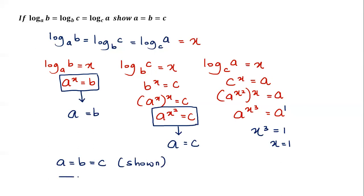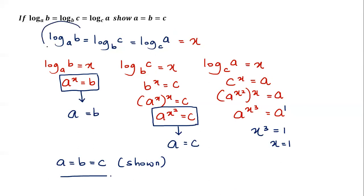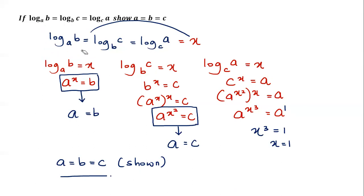To recap: I assigned x to all three logs. I took the first equation log_a(b) = x and changed it to indices to get a^x = b, but couldn't solve x yet because the bases were not equal — a and b are different — so I moved to the next log.